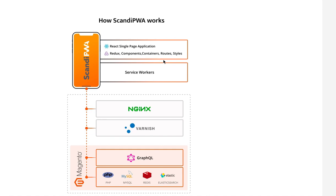Why do we have Varnish here? Because we use Persisted Queries, so whenever the Scandi PWA application is asking for some data from GraphQL, we first check whether this data has already been served before. We check it by request hash, which we store in Redis. The key value is the response from GraphQL that we cache in Varnish. If it's available, it's served in 20 milliseconds. And then whenever something is changed in Magento, Varnish — which is tightly integrated natively with Magento — this cache is invalidated via x-tags.